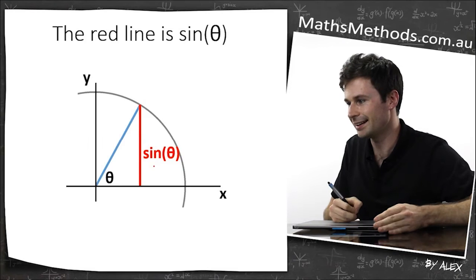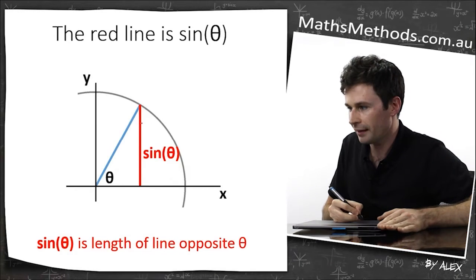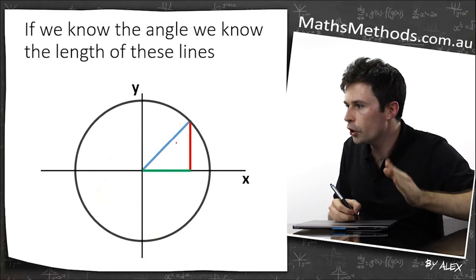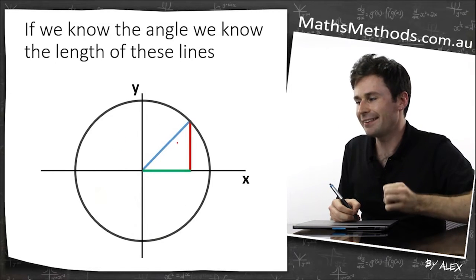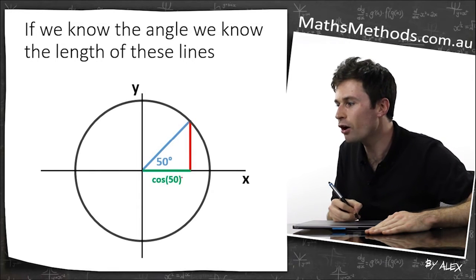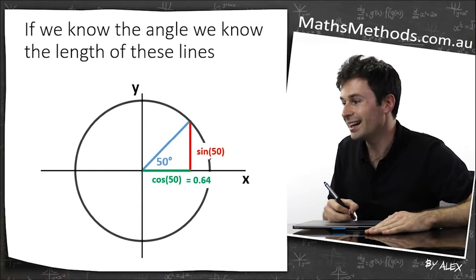This is sine theta, and it's the length of this line opposite theta. Cos theta is the length of the line next to theta. If we know the angle, we know the length of these lines. If this is 50, the length of this line is cos 50. The length of this line is sine 50.